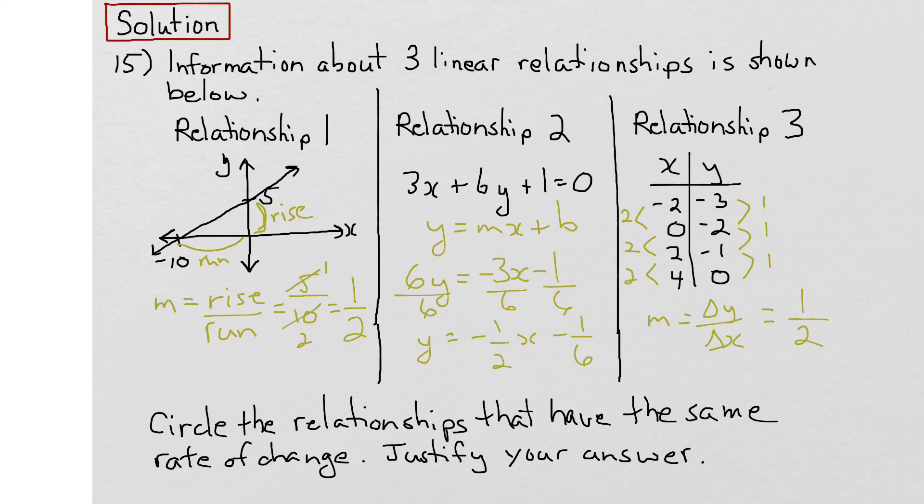Now we know what the rates of change for each of these are. Let's write this out. m in the first one here is positive 1 half. m in the second one is given by the value of the coefficient of x, which is negative 1 half.